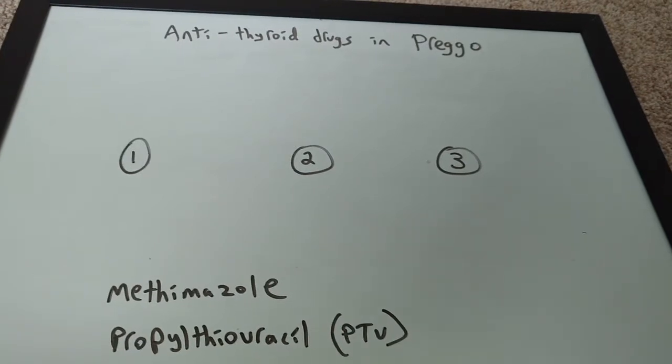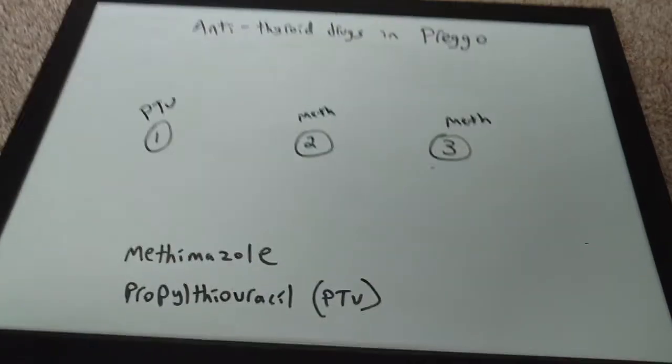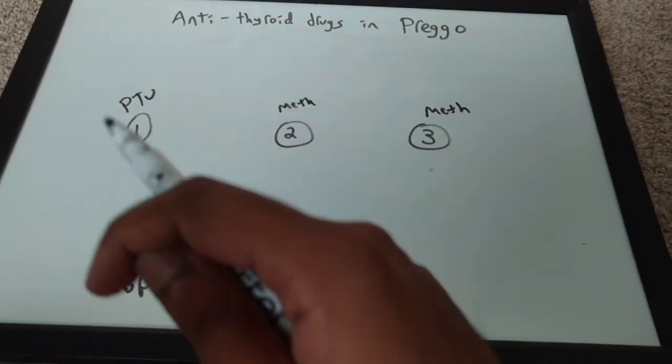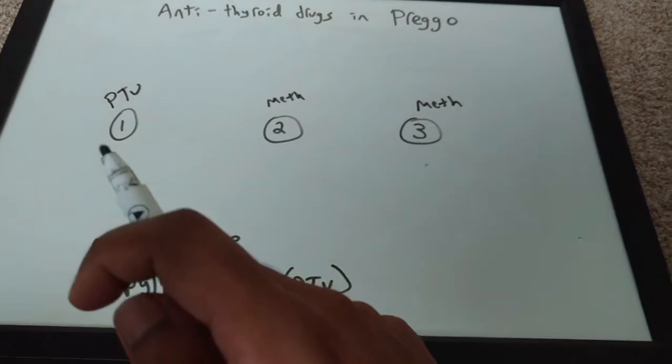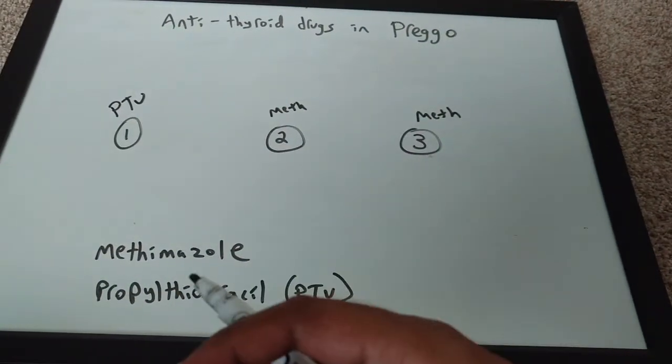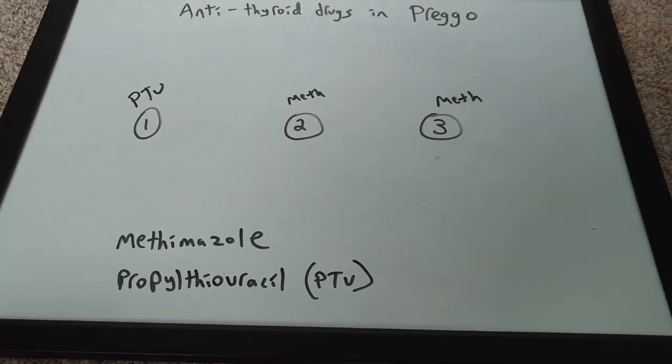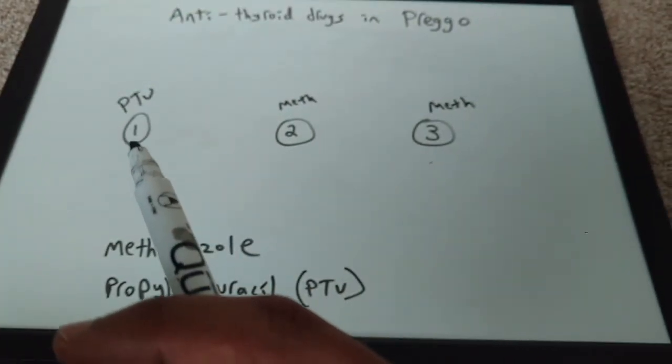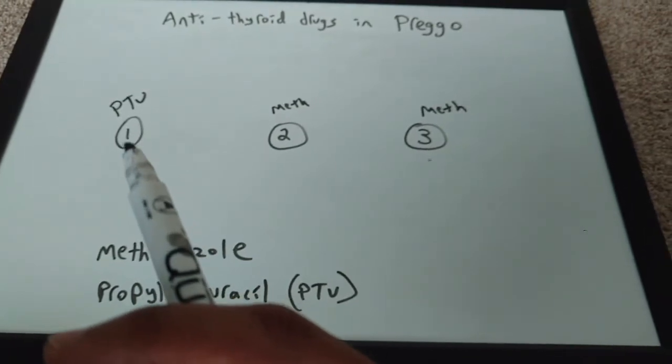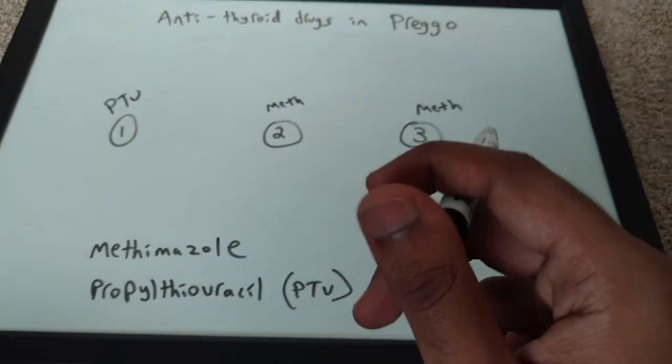First trimester, you give PTU. Second and third, you give methamazole. In the first trimester, the baby is developing. Meth sounds pretty bad—would you really want to give a pregnant lady meth in the early stages of pregnancy? No. So PTU, then methamazole.